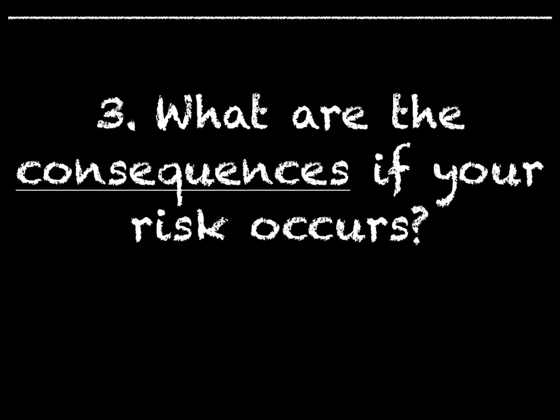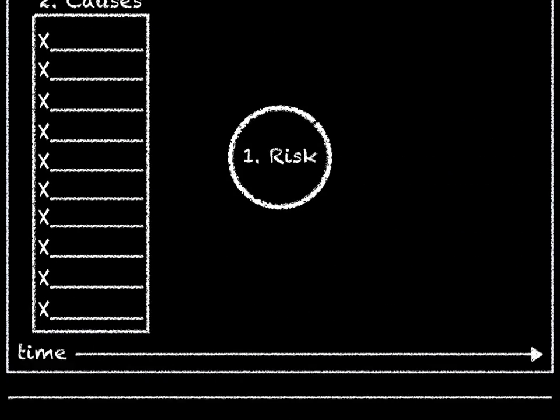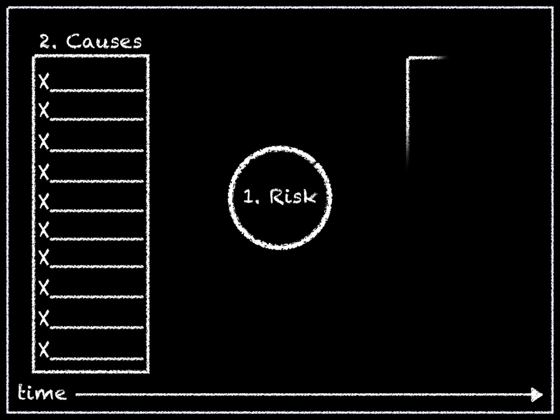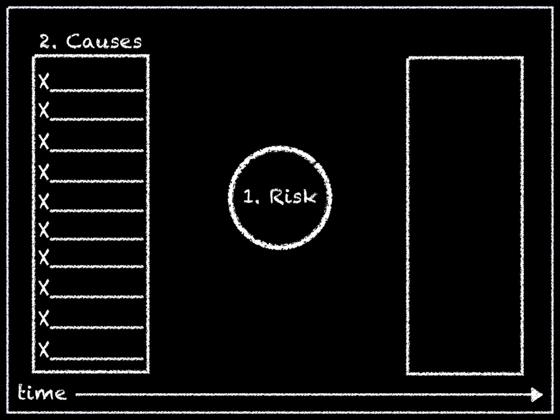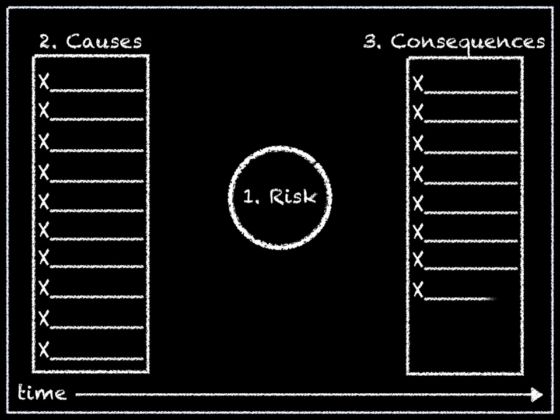Step 3: What are the consequences or impacts of your risk if it does occur? On the right-hand side of your paper, list all of the consequences that may result if the risk materialises. These can be either positive or negative.